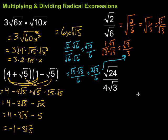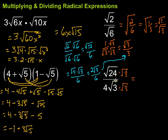Let's take a look at this last one: the square root of 24 over 4 times the square root of 3. I need to rationalize the denominator, and there's also a perfect square factor of 24, so I have a choice — simplify 24 first, or rationalize first. I'll choose to rationalize and then simplify. Multiplying by square root of 3 on the top and bottom: on top I get the square root of 72, and on the bottom square root of 3 times square root of 3 is the square root of 9, which is 3, and then 4 times 3 on the bottom.